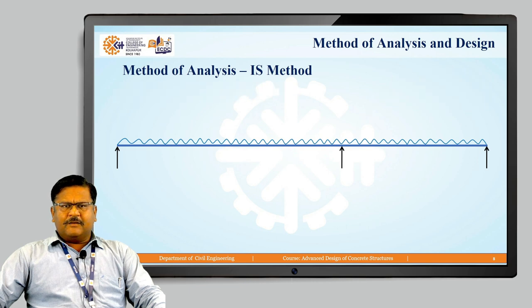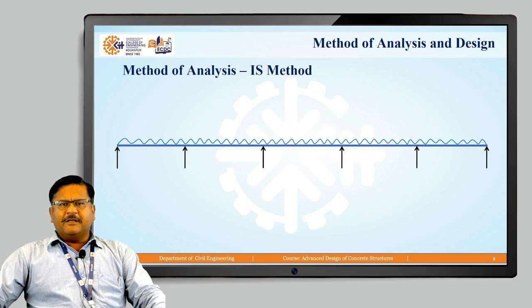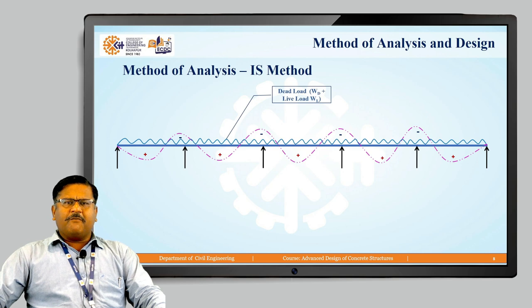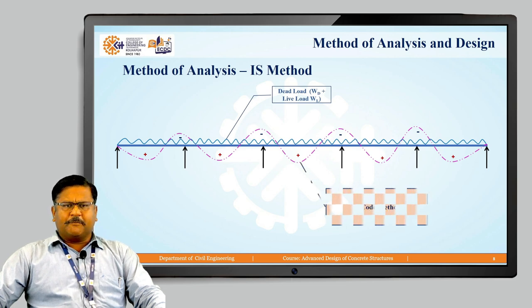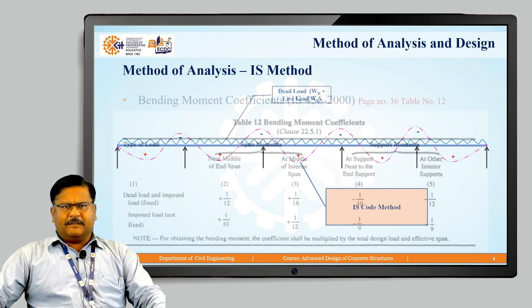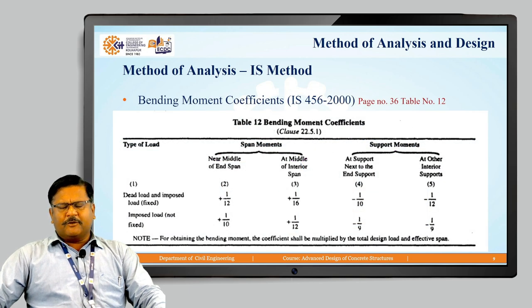Now the main part: consider a continuous beam having 6 supports and 5 spans, loaded with a UDL — dead load plus live load as total load. The shape of the bending moment is such that span moments act at each span and support moments act at the supports. This type of beam is analyzed by the IS code method.